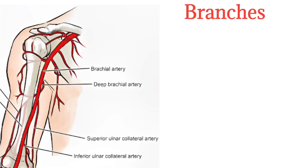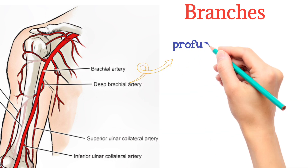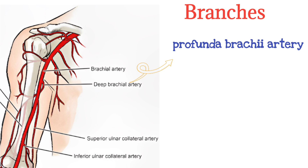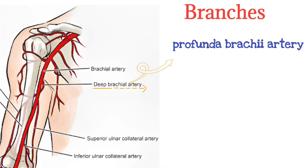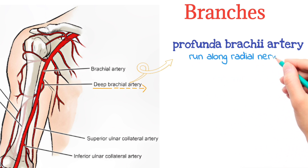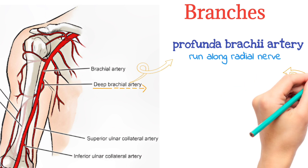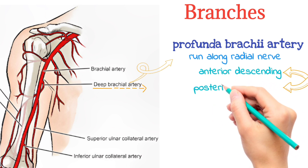Branches of the brachial artery. The brachial artery contains several branches. From top to bottom, they include the profunda brachii artery, also called the deep brachial artery. This is the first branch of the brachial artery. It supplies blood to parts of the humerus bone, deltoid muscle, and triceps muscle. It runs alongside the radial nerve, and it terminates into anterior and posterior descending branches.